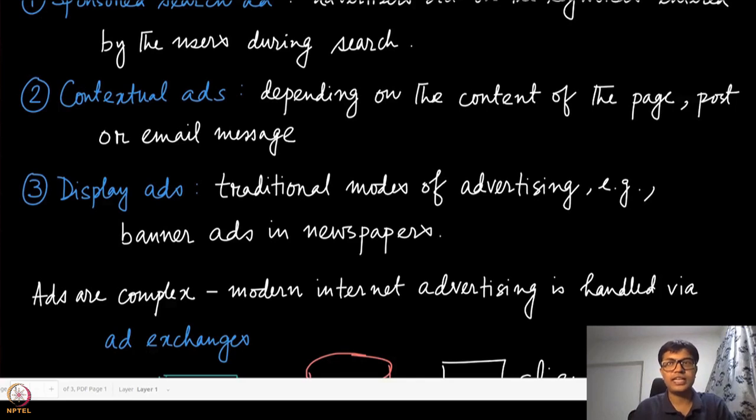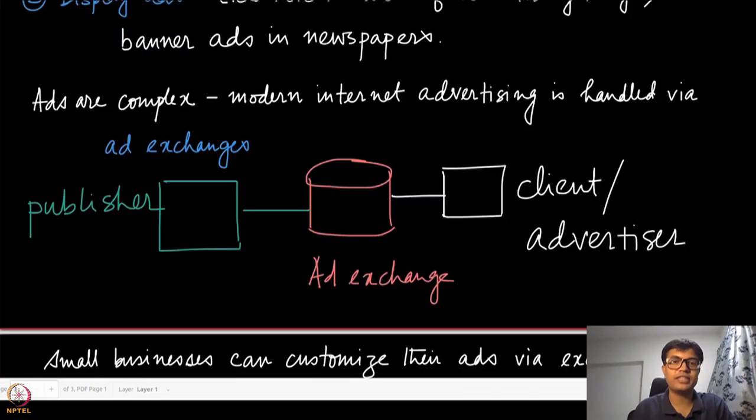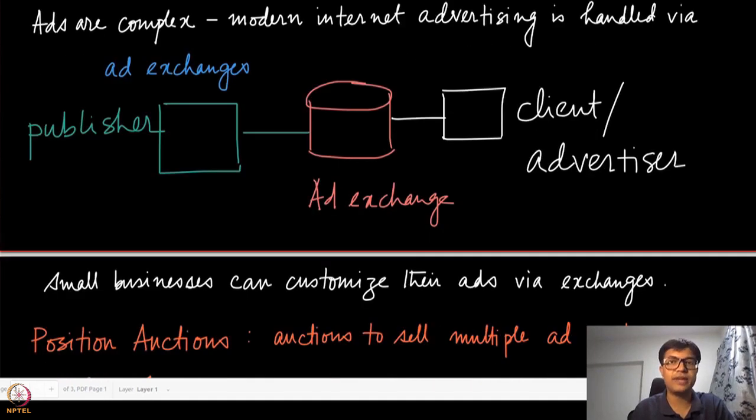Modern day advertisements on the internet are very complex. Just to give you a feel of how it works in practice, they are generally handled by something known as the ad exchange. Think of this as an analog of telephone exchange. In traditional telephone systems, there is some exchange sitting at a centralized location, and if you are making a call to someone else, you are the client making the request to that exchange.